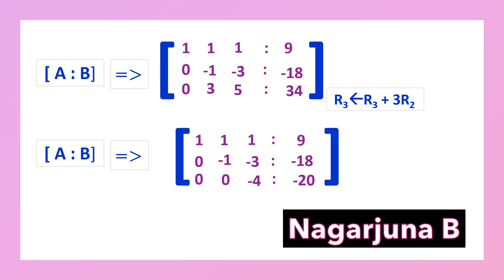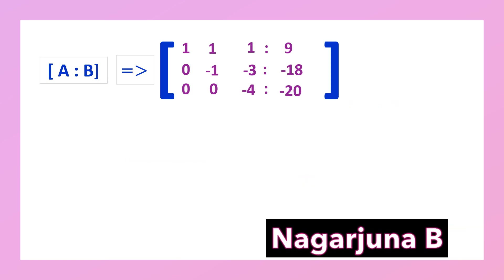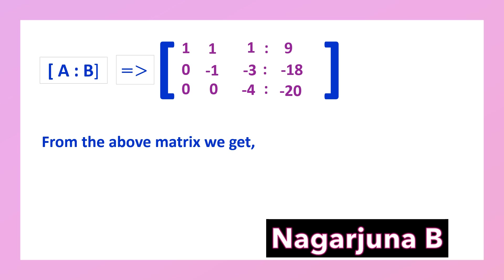We now have an upper triangular matrix. Step 3 of Gauss elimination says this can be written as equations. From the matrix: row 1 gives x plus y plus z = 9.